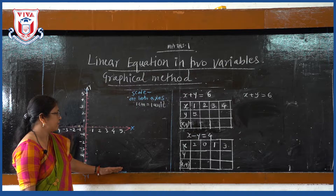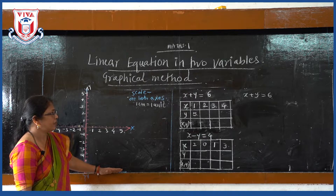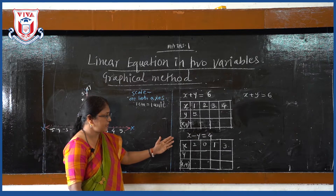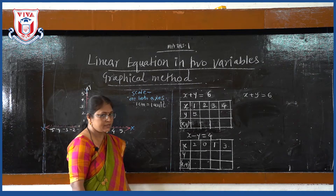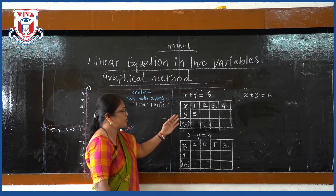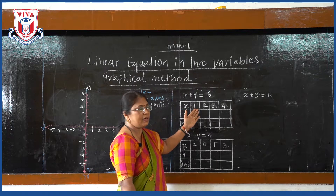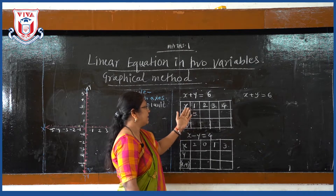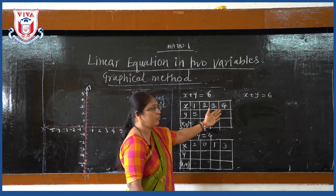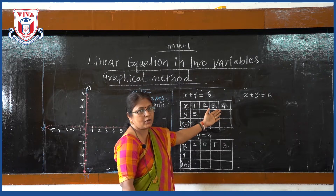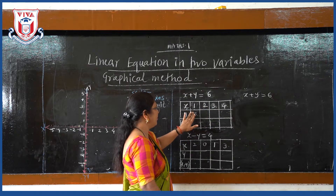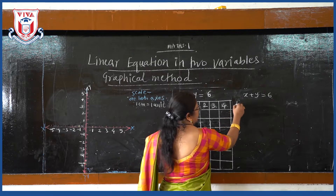The given equations are x plus y is equal to 6, and x minus y is equal to 4. We can take any value of x — here we take x equal to 1, 2, 3, 4 — and find the corresponding value of y.